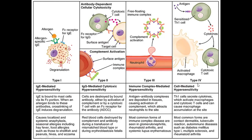Type 4 is delayed cell-mediated hypersensitivity. T helper cells identify the drug as an antigen, then release cytokines — inflammatory mediators — which activate macrophages and cytotoxic T cells. These produce the inflammatory response. Type 4 hypersensitivity occurs in tubercle reactions, contact dermatitis, autoimmune diseases, and rheumatoid arthritis.